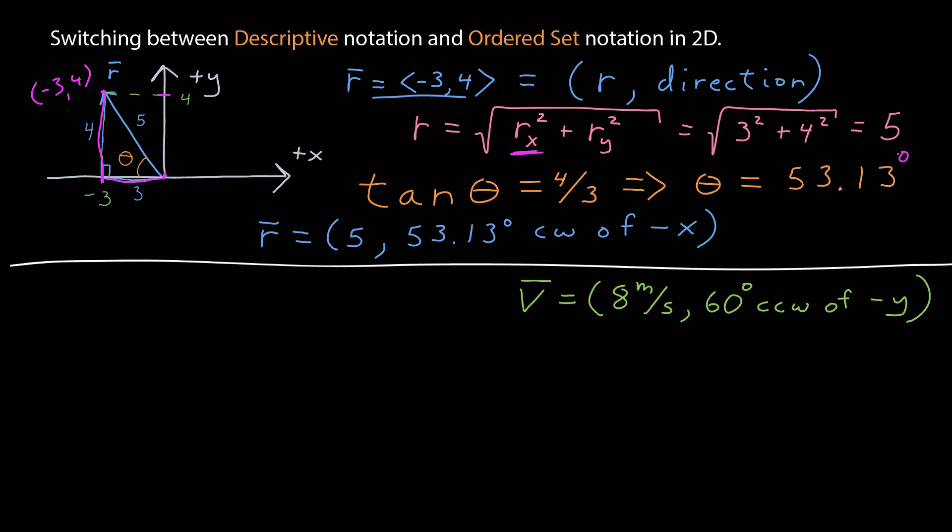Now, let's go from the descriptive notation to the ordered set notation. I'm given a velocity vector this time. It has a magnitude of 8 meters per second and the direction of 60 degrees counterclockwise of the negative y-axis.